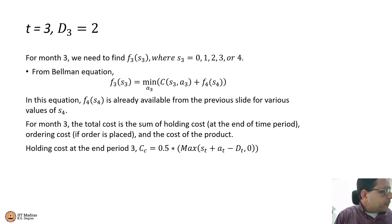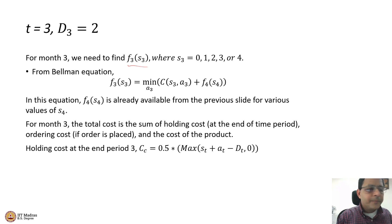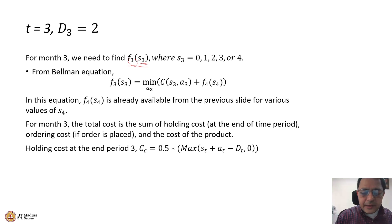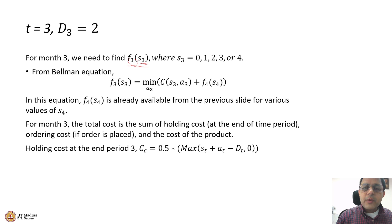The objective function is to minimize F3(S3), which is the stage 3 problem. We are in stage 3 when the state variable is S3. What are the admissible values of S3? Admissible values of S3 are 0, 1, 2, 3, and 4.